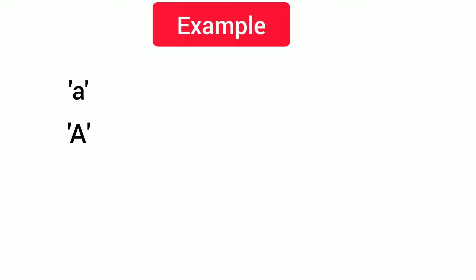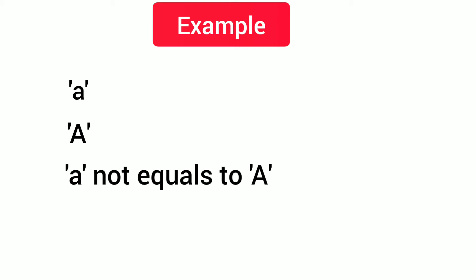Capital 'A' is also a single character constant. Note that lowercase 'a' and capital 'A' are not equal, because their values are different. Also, '5' — the digit 5 enclosed within single quotation marks — is also a single character constant, because the number 5 is enclosed within single quotation marks.